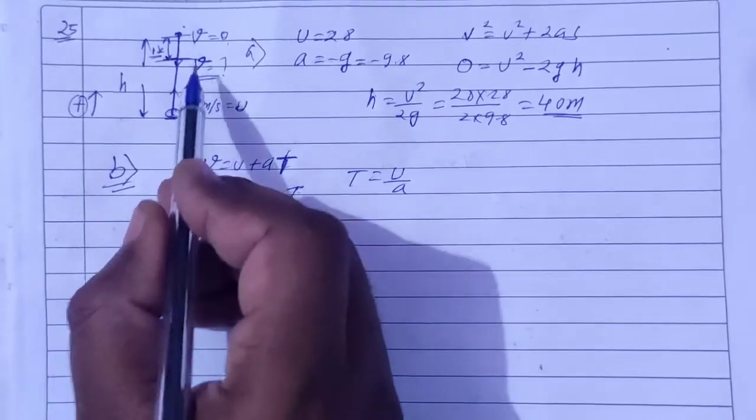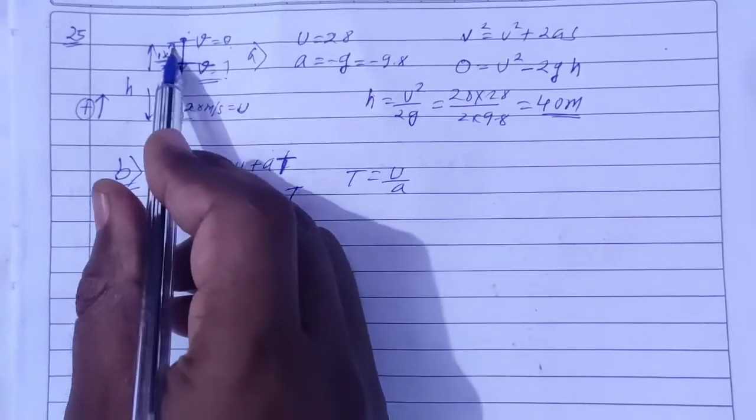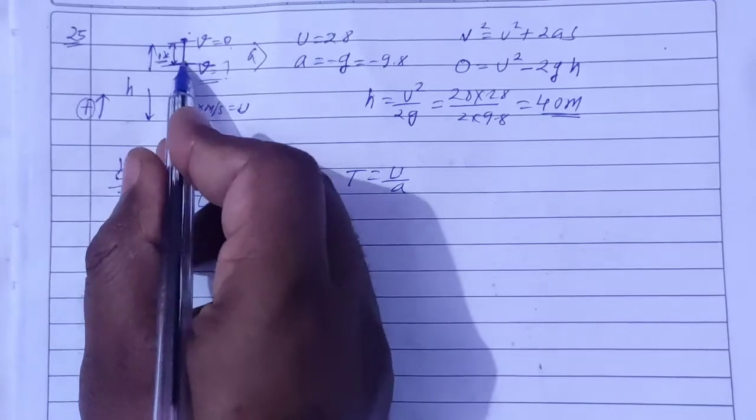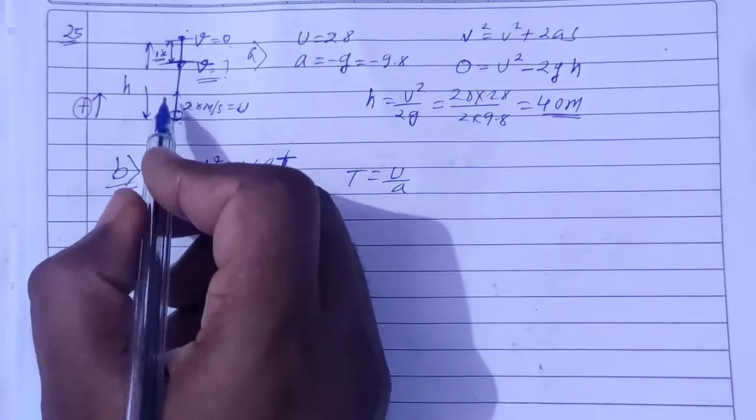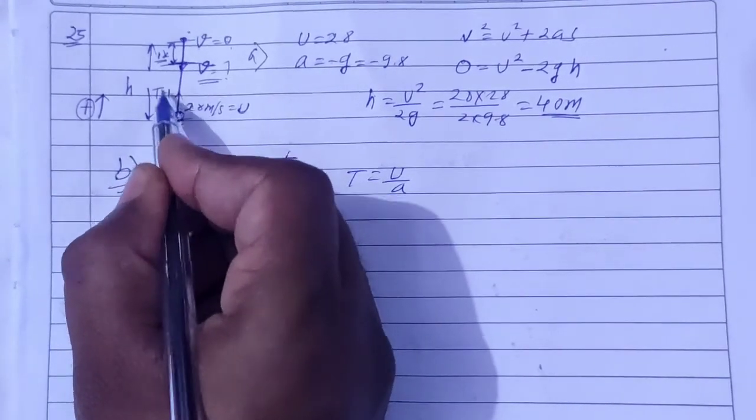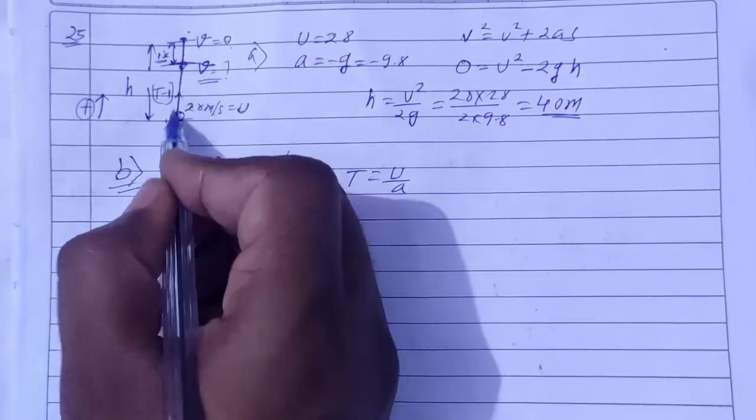Now we need to find the speed at time T-1. At capital T minus 1 second, the stone will be at that position where we need to find velocity.